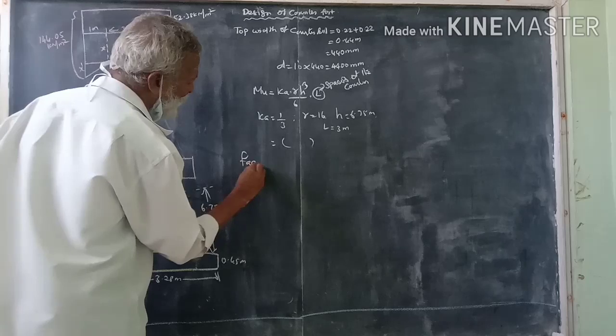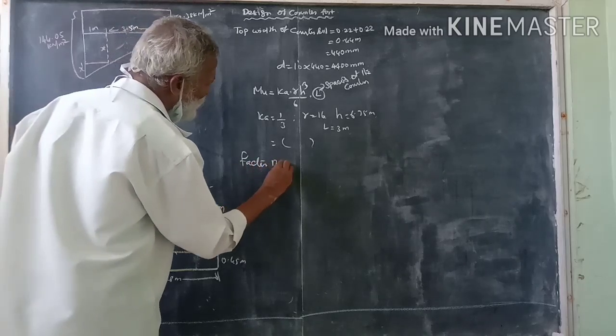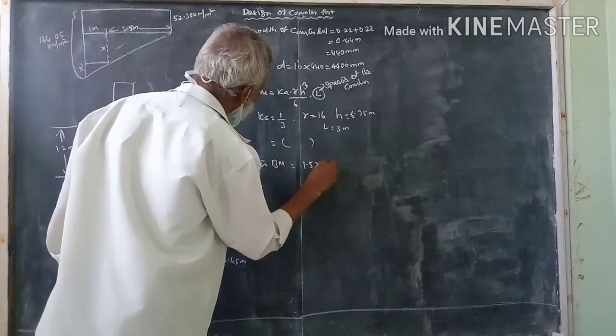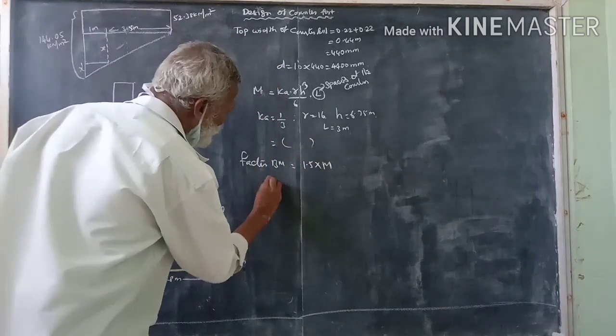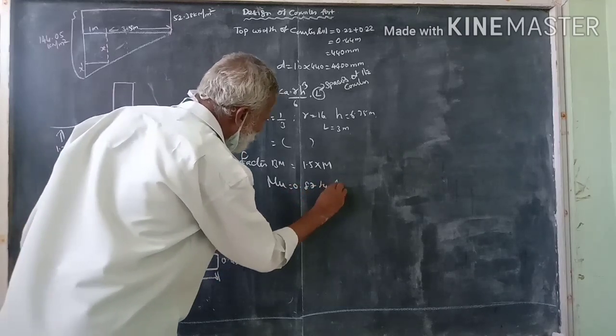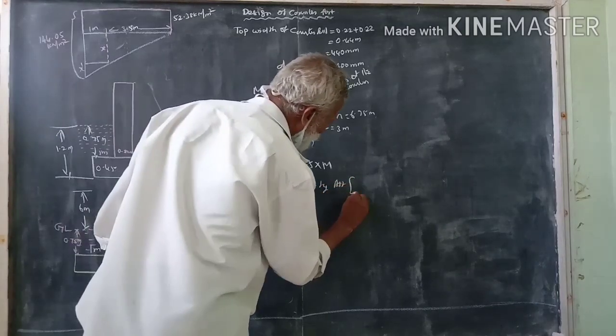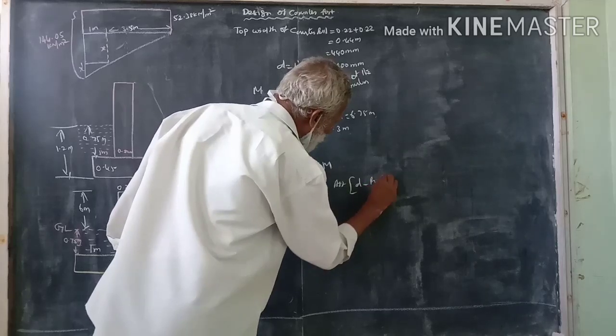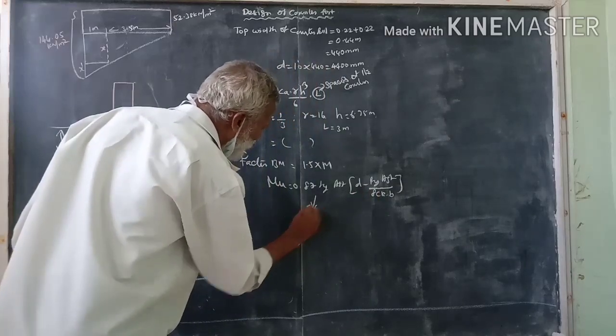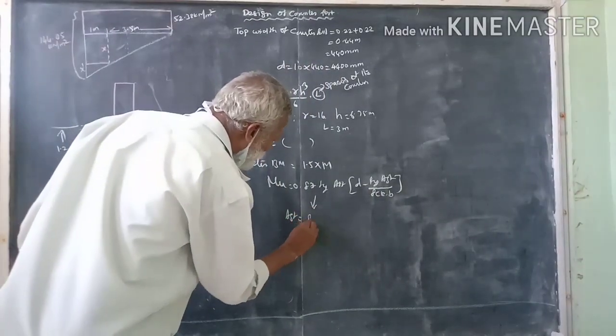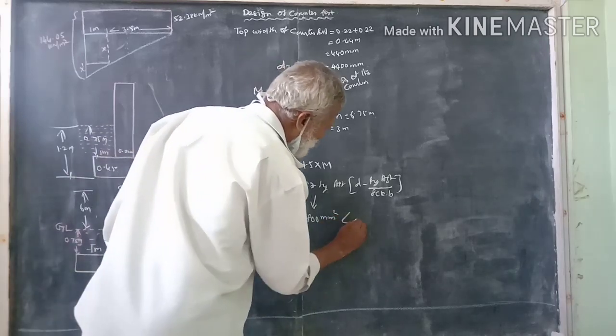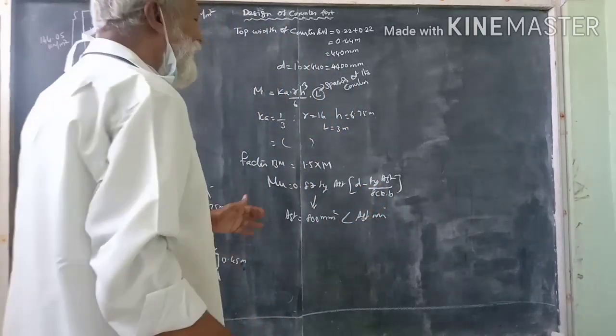Factor bending moment, the factored bending moment equal to 1.5 into the m. Now mu is equal to 0.87 fy into Ast into d minus fy Ast by fck. The value is less than minimum.